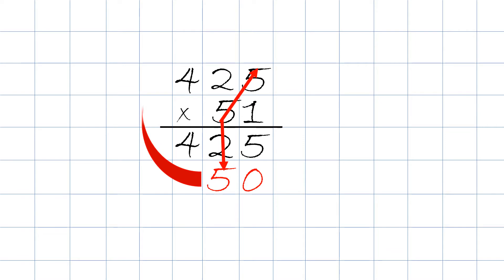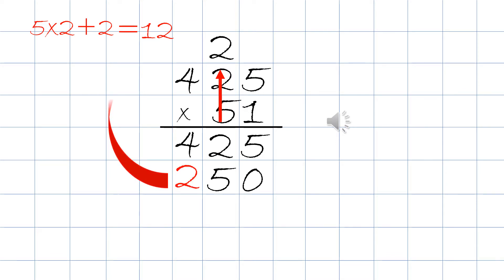The 2, we carry it to the top and put it above the other 2. We then take 5 times 2 plus the 2 on top, and we know the answer will be 12. So we put the second digit, the 2 right here underneath the 4, and we bring the 1 and put it on top of the 4. We then take 5 times 4 plus the 1 on top, and the answer will be 21, which we write both digits right up here.